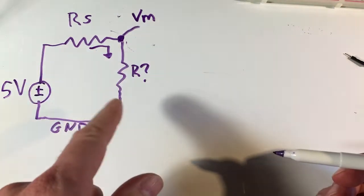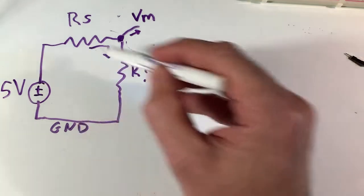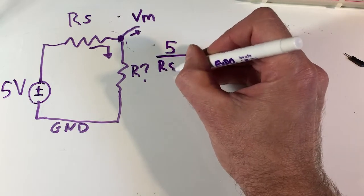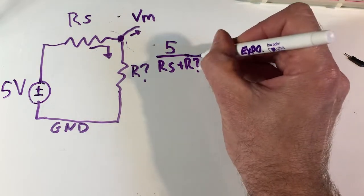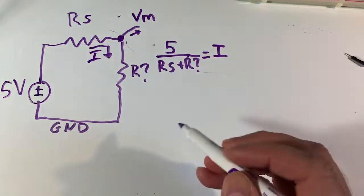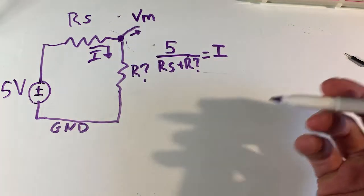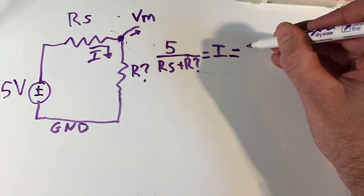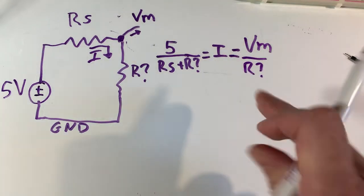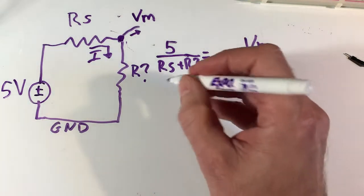So first thing I'm going to do is find the current in the loop. No current is going to be flowing out of that node for now. We could say there's one current loop going around the circuit. We know that the voltage source divided by the total resistance RS plus R question mark is going to equal I, which is current around the loop. And we know that if we know VM and R here, that's going to be equal to V equal to I also. We know VM because our Arduino is going to be measuring it for us. And so now we could take the current out of the equation.